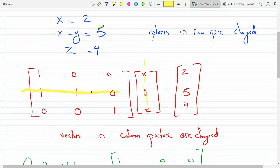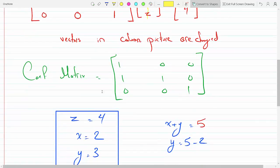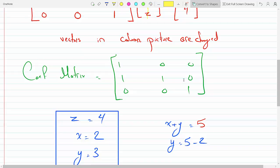Now, the coefficient matrix is just this matrix here, that basically corresponds to the coefficients of the variables, 3 by 3: 1, 0, 0; 1, 1, 0; and 0, 0, 1.